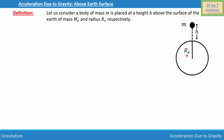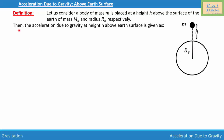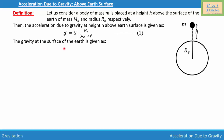The body is Re plus h distance away from the center of the Earth. The acceleration due to gravity at height h above the Earth's surface is given as g' = GMe / (Re + h)², which is equation one. The acceleration due to gravity at the surface of Earth is g = GMe / Re², which is equation two.